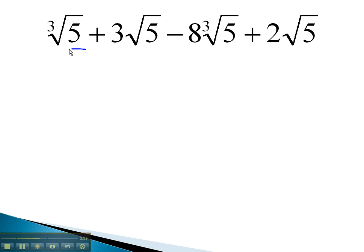The first root is a cubed root of 5. It's going to be like the other cubed root of 5. 1 minus 8 gives us negative 7 of these cubed roots of 5.